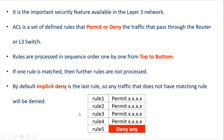Whenever traffic comes to the router, the router will go to its ACL. When traffic is passed to that interface, the router will check its ACL and process each rule in sequence order — one by one — checking whether the traffic falls under rule one. If not, it will go to the next rule, and so on.